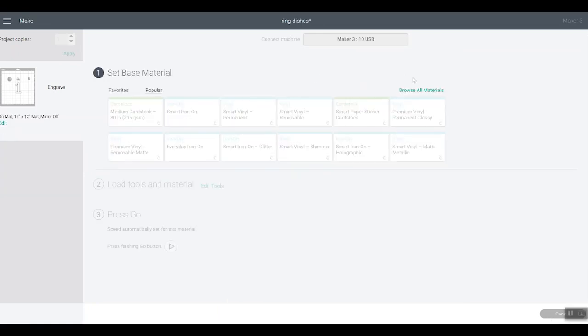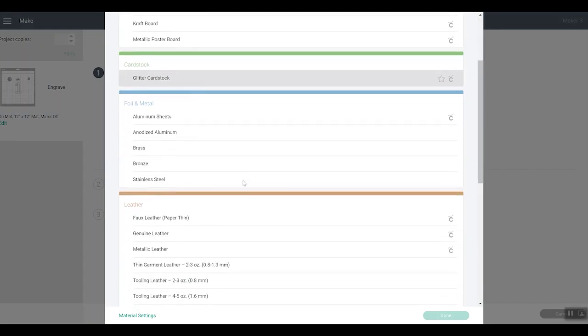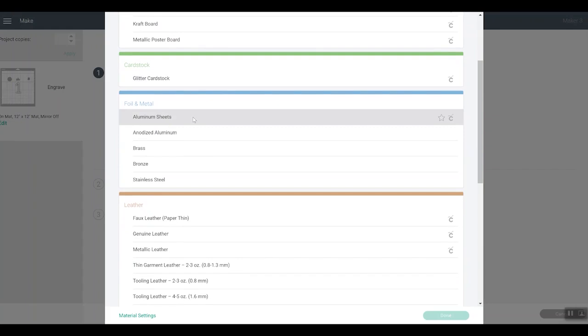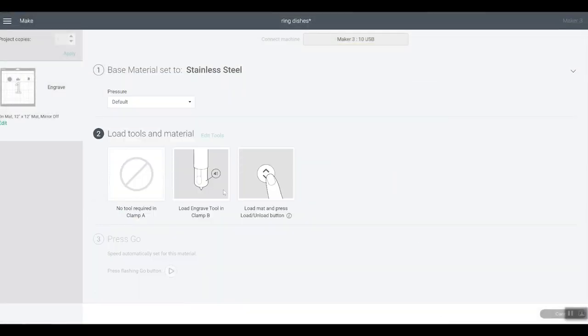And then at this point, we're going to pick our materials. So if you'll click browse on materials, the compatible materials will be what is available for you. And you should see aluminum sheets. So you have aluminum sheets, aluminum, brass, bronze, and stainless steel. This material is most like stainless steel. So I'm going to go ahead and pick stainless steel from the options and click done. And now it tells me to load my engraving tool in clamp B and press the load, unload button. So let's head to our maker and see what happens.